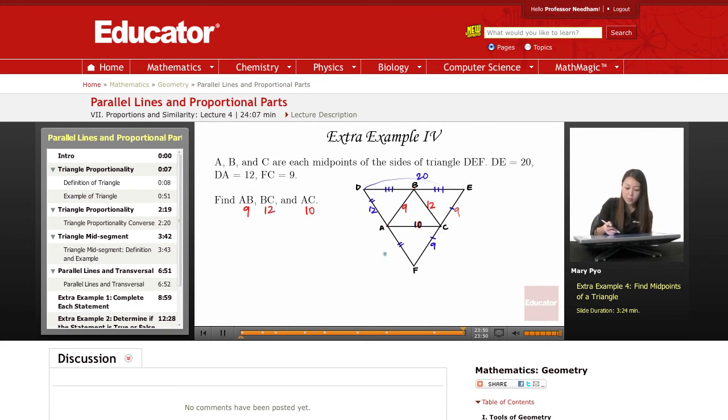Okay? So for this example, it's just three midsegments in one triangle. Okay? So here's A, B, B, C, and A, C. And that is it for this lesson. Thank you for watching Educator.com.